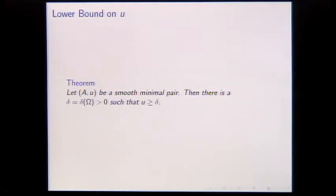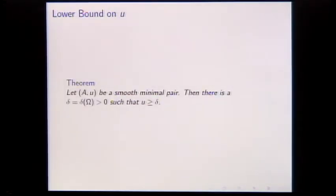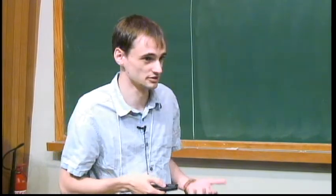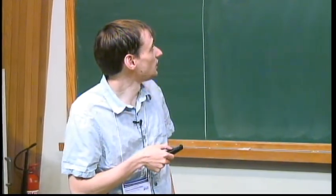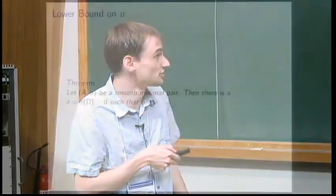Based on this observation, we prove - you should think of this as an a priori estimate - if you have a smooth minimizer, then there is a constant which depends only on the original domain and some weak data, like its size, such that U is strictly larger than this positive number. I won't say anything about the proof other than it involves cutting along level sets of U and using those as competitors.